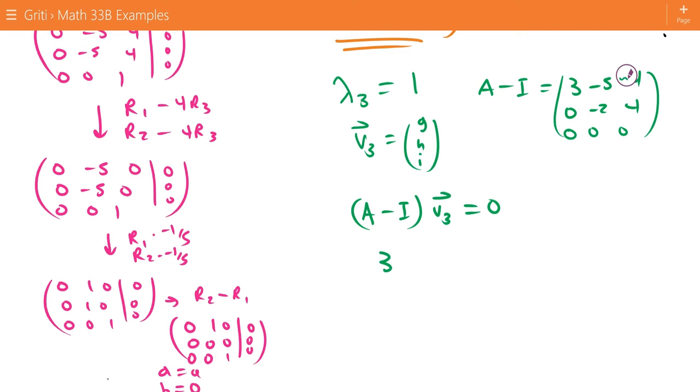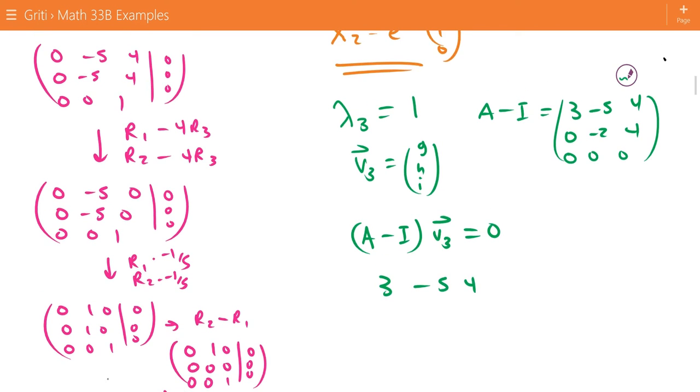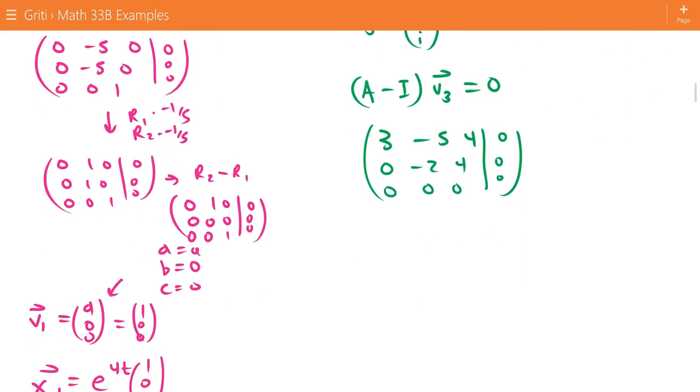which satisfies A minus I times V3 equals 0. This gives us the augmented matrix 3, negative 5, 4, 0, negative 2, 4, and 0, 0, 0. And then on the right, we have 0, 0, 0.